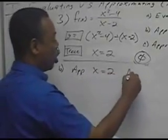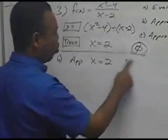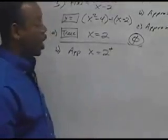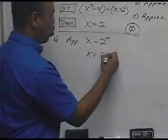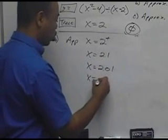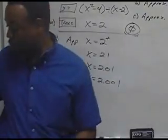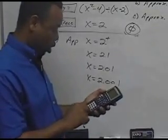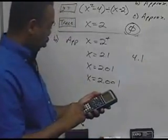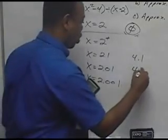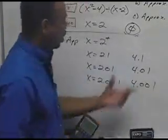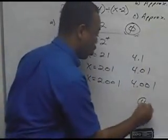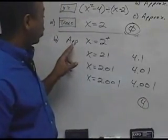Now let's approach x equals 2 from the right. The plus sign here means we're approaching 2 from the right. We'll use the numbers 2.1, 2.01, and 2.001. Trying 2.1 gives 4.1; trying 2.01 gives 4.01; and 2.001 gives 4.001. This is eventually approaching the number 4, so the limit approaching 2 from the right is 4.